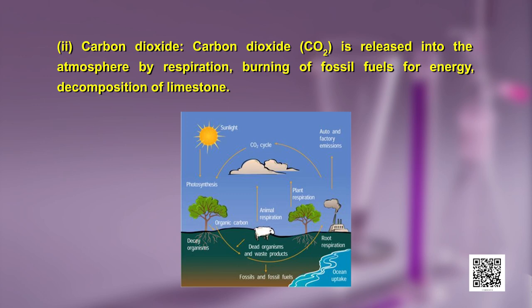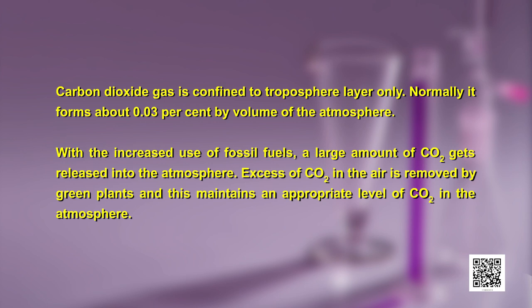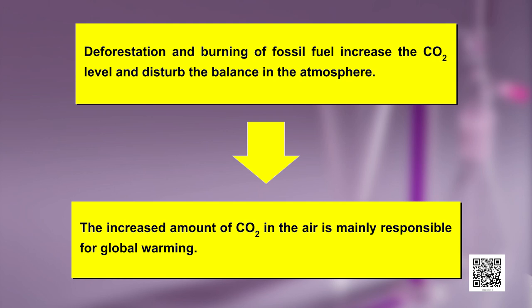Carbon dioxide is released into the atmosphere by respiration, burning of fossil fuels for energy, and decomposition of limestone. It is confined to the troposphere layer and normally forms about 0.03 percent of the atmosphere by volume. With increased use of fossil fuels, large amounts of CO2 are released into the atmosphere. Excess CO2 is removed by green plants through photosynthesis, maintaining an appropriate level. Deforestation and burning of fossil fuels increase CO2 levels, disturbing this balance. The increased amount of CO2 in the air is mainly responsible for global warming.